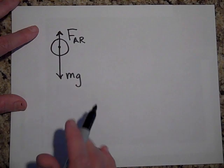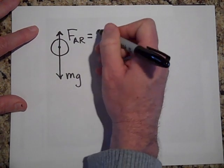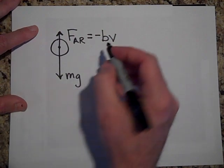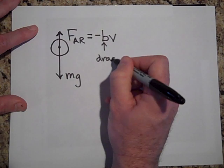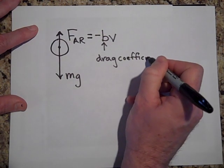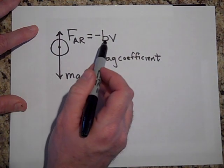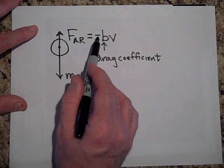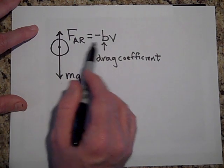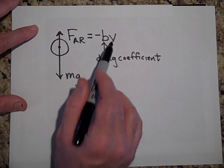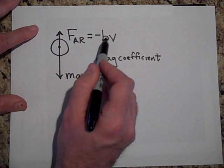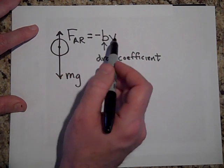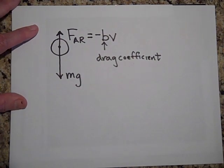We're going to approximate this force as it's going to be negative b times v. The b is called the drag coefficient, and what goes into that coefficient is the fluid that it's falling through and the shape of the object. V is the velocity and the negative sign is there because the air resistance force will be in the direction opposite to v. So if v is positive then the air resistance force will be negative. If v is negative then the air resistance force will be positive.